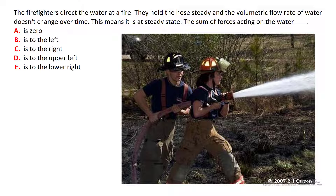Here we've got two firefighters holding a fire hose directing it at a fire. It's at steady state — they're holding the hose steady — and there's a volumetric flow rate of water, maybe 200 gallons per minute. When I say it's at steady state, it just means that it's always at 200 gallons per minute.